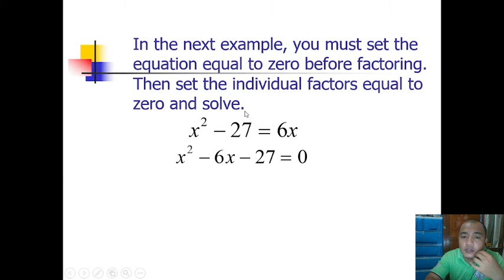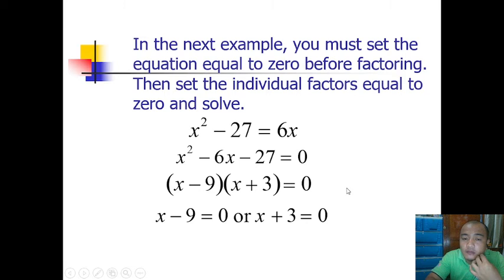First transpose 6x: x²-6x-27=0. Let's factor this. What are the factors of negative 27 that will give us sum of negative 6? That's negative 9 and positive 3, because -9×3=-27 and -9+3=-6. So by applying the zero product property, x-9=0 or x+3=0. Therefore x=9 or x=-3. That's the answer: 9 and negative 3.